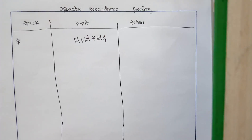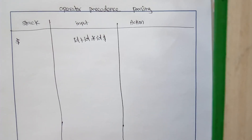Hello everyone. In this session you are going to see what is operator precedence parsing. Already in the previous video we saw what is the leading and trailing of a variable, what is an operator grammar, how to find leading and trailing of a variable, and then we constructed an operator precedence table out of this leading and trailing.